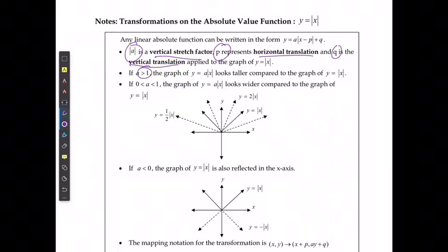If A is greater than 1, then it looks taller compared to the original. If A is between 0 and 1, it looks wider, very similar to what we had before.